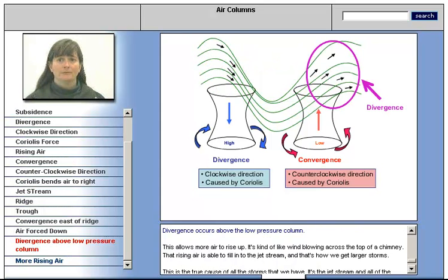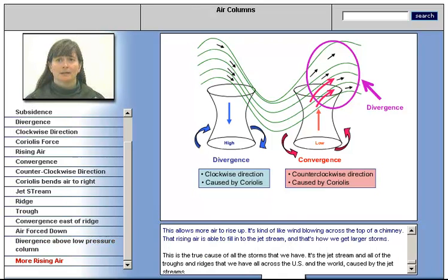Divergence occurs above the low pressure column. This allows more air to rise up. It is kind of like blowing across the top of a chimney. The rising air is able to fill in to the jet stream, and that is how we get larger storms. This is the true cause of all the storms that we have, is the jet stream and the troughs and ridges that we have all across the U.S. and the world, caused by the jet streams.